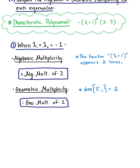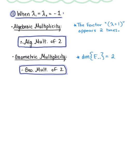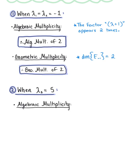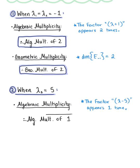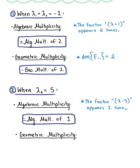Now for lambda sub 3 equal to 5: the algebraic multiplicity — the factor (lambda-5) appears one time, so the algebraic multiplicity of this eigenvalue is 1. And last but not least, the geometric multiplicity: the dimension of the eigenspace E sub 5 equals 1 because the spanning set contains one vector, so this eigenvalue has a geometric multiplicity of 1.